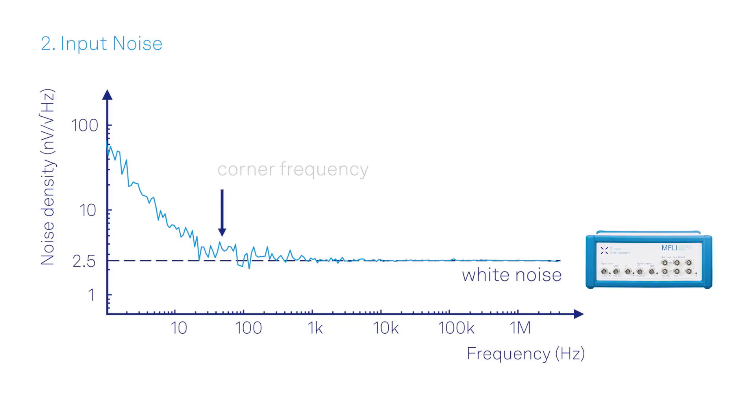Below the corner frequency, the voltage noise density scales typically as the inverse of frequency. For best results, you should consider an instrument with a corner frequency lower than your target frequency and a low and flat noise floor to minimize the disturbances in your measurement.